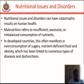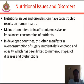Nutritional issues and disorders can have catastrophic results on human health. Malnutrition refers to insufficient, excessive, or imbalanced consumption of nutrients. In developed countries, this often manifests as overconsumption of sugary, nutrient-deficient food and obesity. In the developing world, where access to food is often compromised, this manifests as hunger, starvation, and malnourishment, preventing proper growth and maintenance of vital body functions. One of the best things a person can do is maintain a nutritious diet.